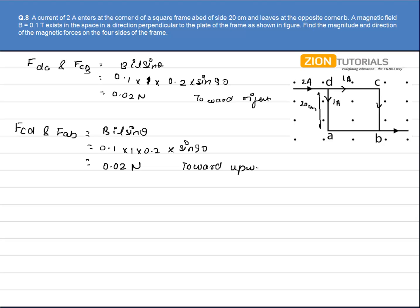I hope you know how to find the direction, right? The best way to calculate the direction is I DL cross B. I mean, stretch your fingers in the direction of the DL vector and curl your fingers in the direction of the magnetic field, the thumb will give you the direction of the force.